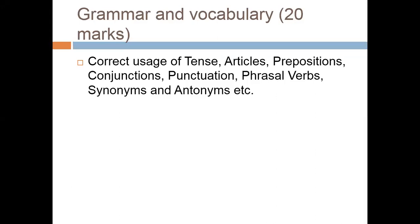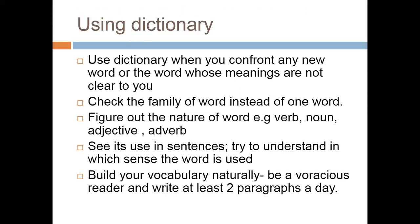After that comes Grammar and Vocab — 20 marks. This includes correct usage of tense, article, preposition, conjunction, punctuation, and present word. Up to this point the focus is on your language skill. However, you have to use your time intelligently — don't spend all your time on this; it is also a kind of gambling.